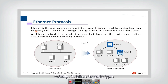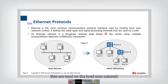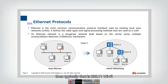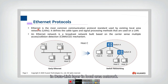Ethernet defines the cable types and signal processing methods that are used on the local area network. If in your local area network you connect your host using a cable, then you will use Ethernet. If you connect your PC using wireless, then typically that is 802.11 Wi-Fi. So Ethernet is one of the most important protocols in the data link layer in local area networks.